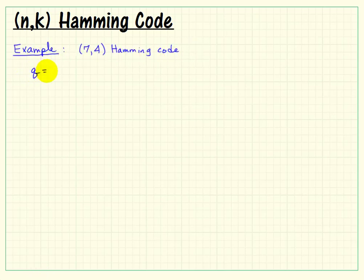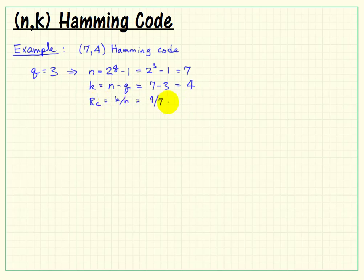To make this more tangible, let's consider specifically a (7,4) Hamming code, also referred to as a rate 4 sevenths code. Doing some quick conversions from the choice of 3 check bits, the rate is just above 50%.